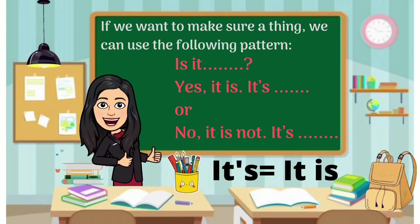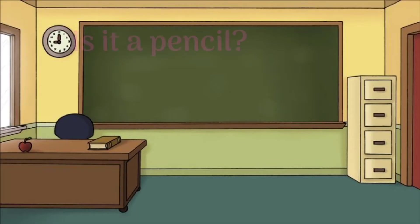In the blanks we can put the kinds of things. For example, the things in the classroom. So we can say: 'Is it a book? Yes, it is. It's a book.' Or we can answer by saying 'No, it is not. It's a pencil.' Because last week we discussed about things in the classroom, in this lesson we are going to make questions related to things in the classroom.